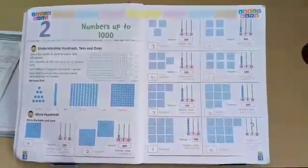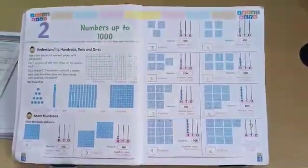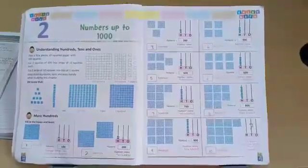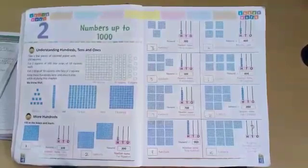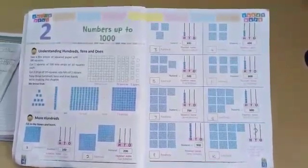In three-digit numbers, there are three place values. You know which are those. First one is 100s, second is 10s, and third is 1s.